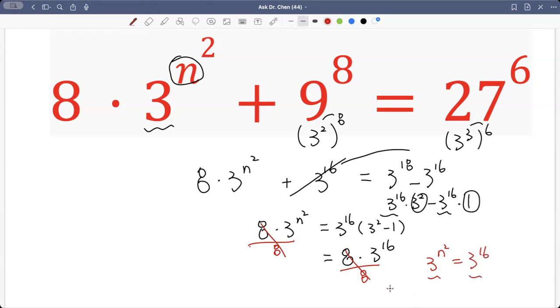For base 3, that means that n squared has to be 16. Take the square root of both sides. That means n has to be plus or minus 4.